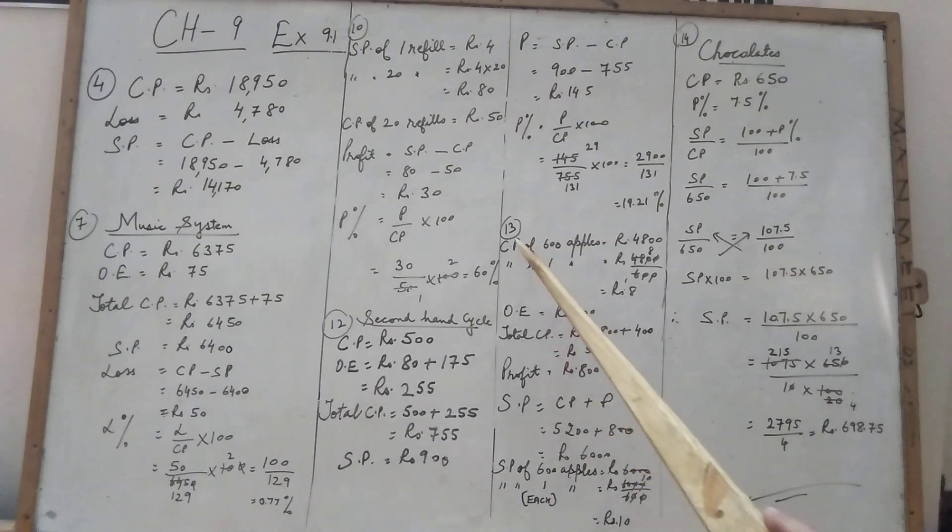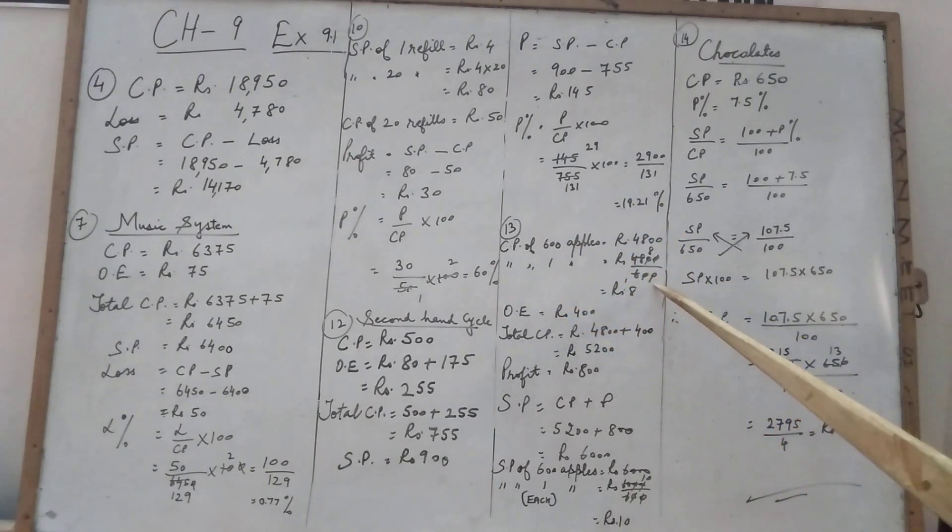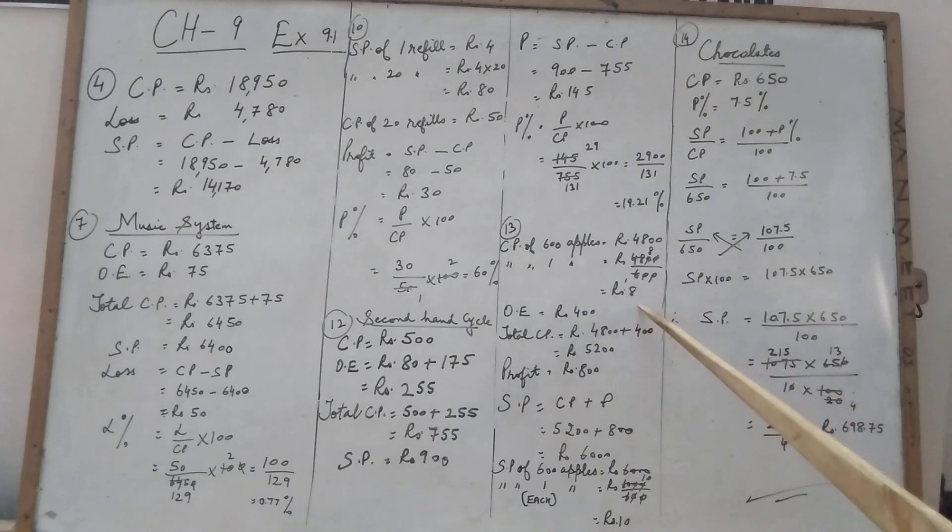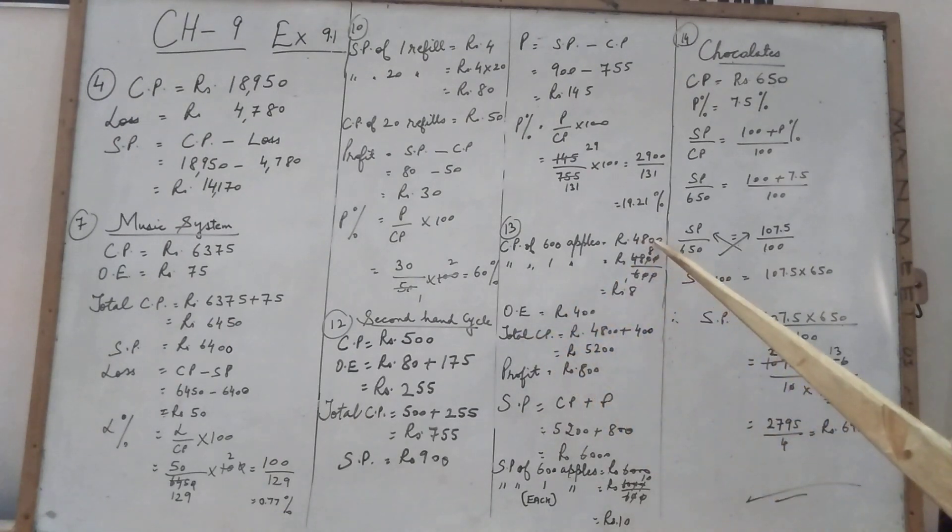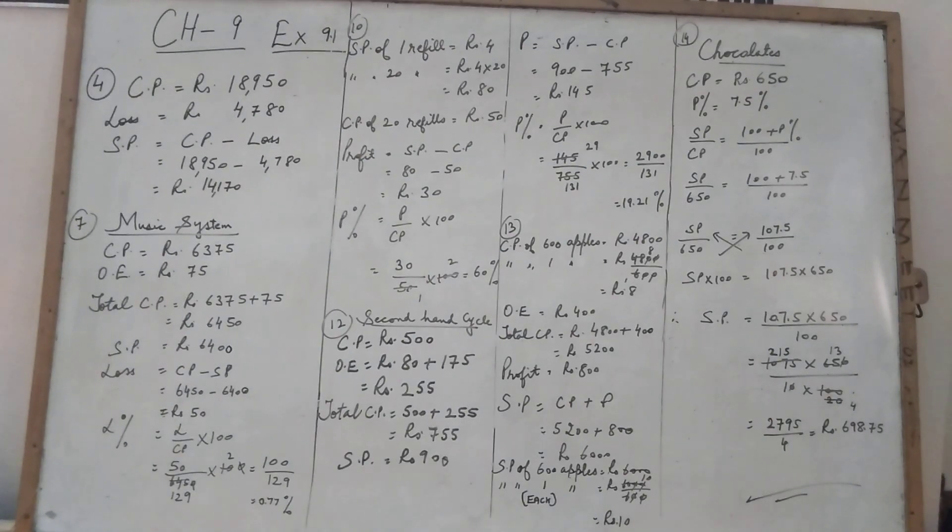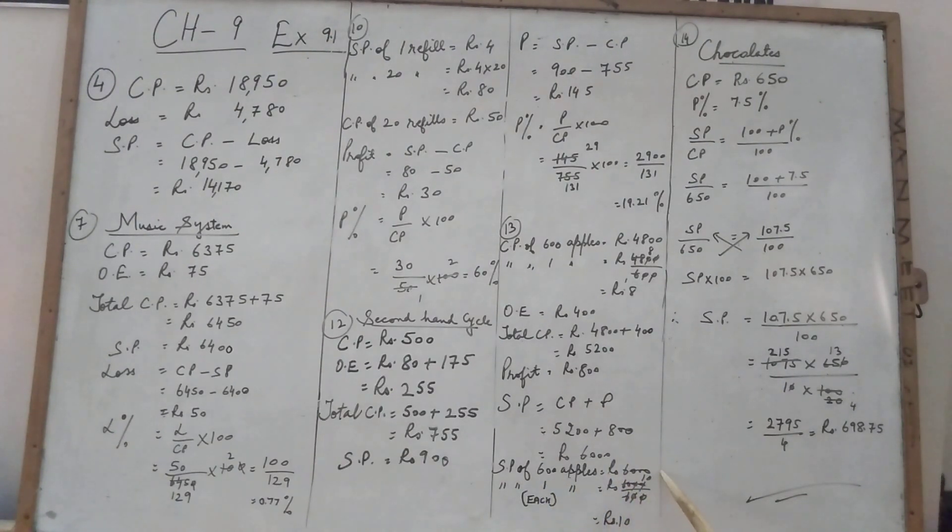Now see children, cost price of 600 apples, Rs. 4,800. Cost price of each apple, one apple, Rs. 4,800 upon 600, do the cutting, Rs. 8. Now overhead expenses is Rs. 400 given here for transportation. So total CP, we have to take Rs. 4,800 plus Rs. 400, Rs. 5,200. Profit is Rs. 800 given. So selling price formula is cost price plus profit. So Rs. 5,200 plus Rs. 800 is Rs. 6,000.